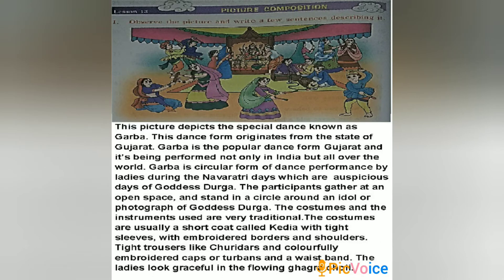This picture depicts the special dance known as Garba. This dance form originates from the state of Gujarat. Garba is a popular dance form and is being performed not only by Indians but even all over the world. Garba is a circular form of dance performed by ladies during the Navratri days, which are very auspicious days of Goddess Durga.